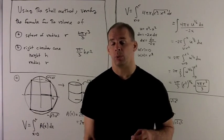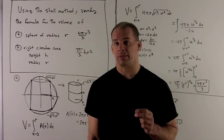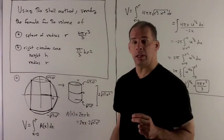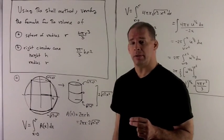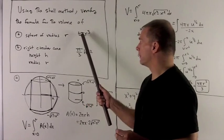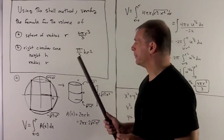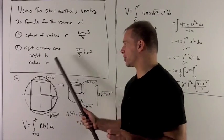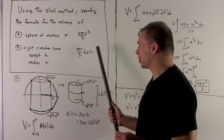Using the shell method, we want to verify the formula for the volume of a sphere of radius r, which is 4πr³/3, and the volume for a right circular cone with height h and radius r, which is πhr²/3.